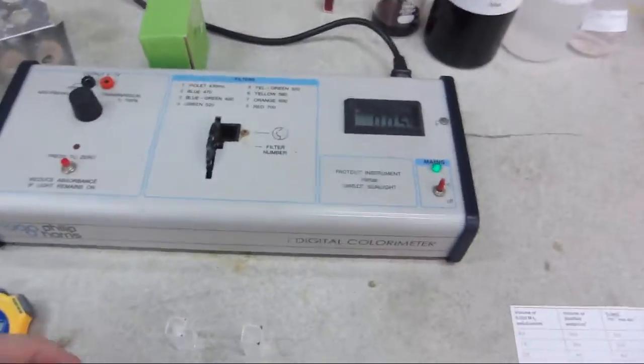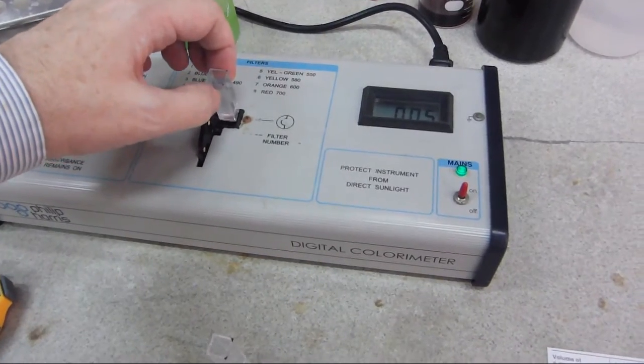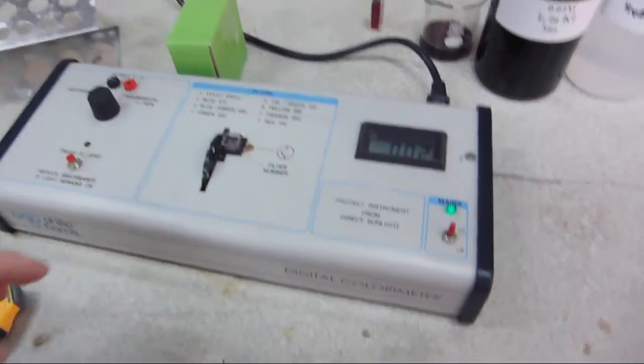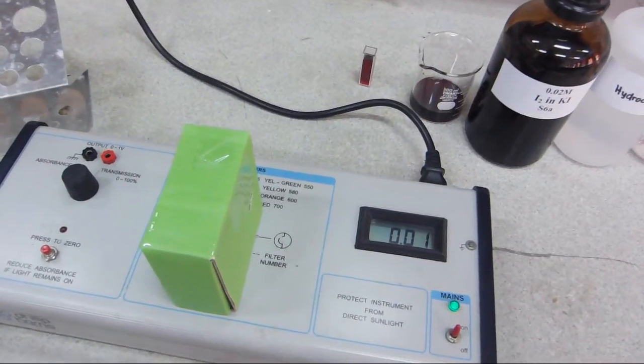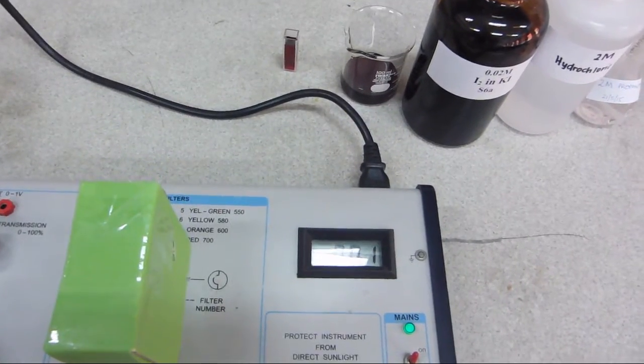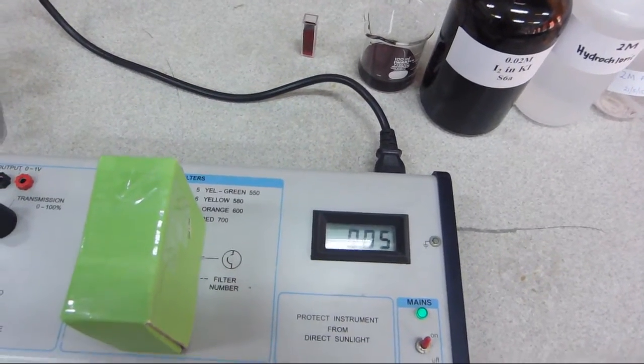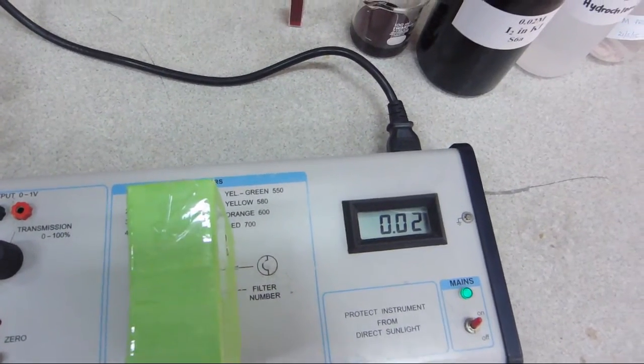The first thing we need to do is to put our cuvette, same orientation, same way round, into the colorimeter, cover it to make sure that no extraneous light is getting in, and zero the machine. You can see that we are in fact seeing an absorbance reading of very close to zero.